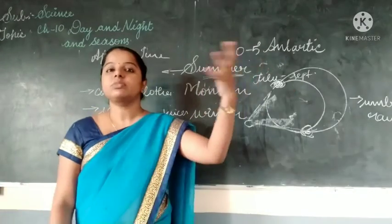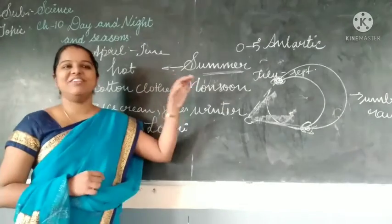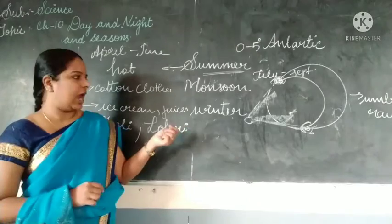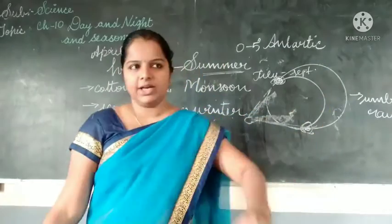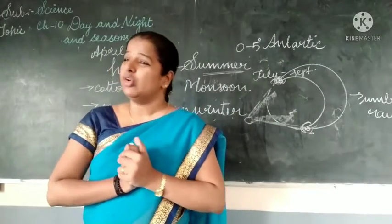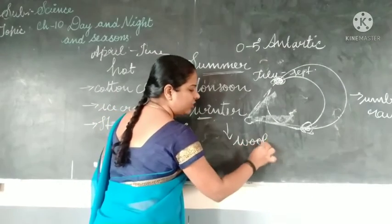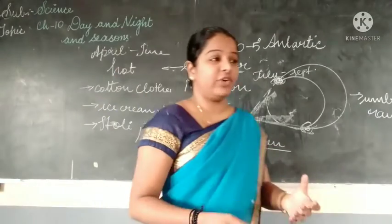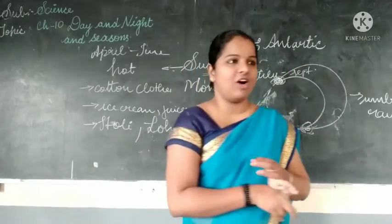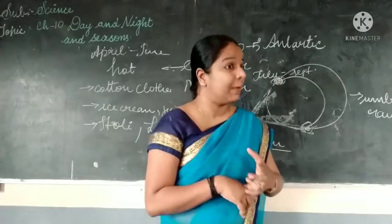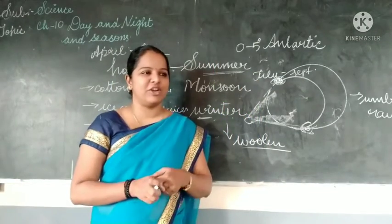In monsoon — the rainy season — we eat garam pakoda and we use raincoats and umbrellas. Next comes winter season, which begins from October to March or February. In winter season the climate is very cold. We wear woolen clothes to keep ourselves warm. In winter season we get fruits like apples and oranges, and vegetables like green peas, sweet potato, and others.